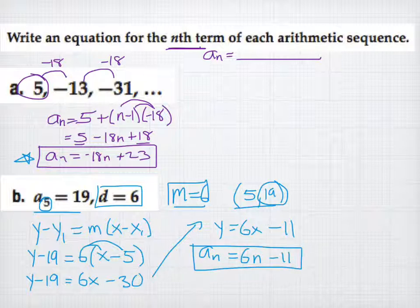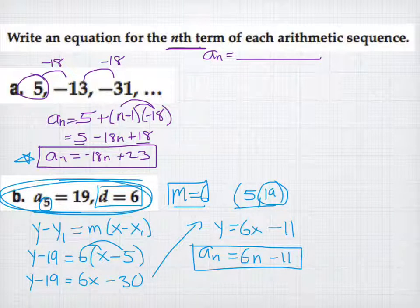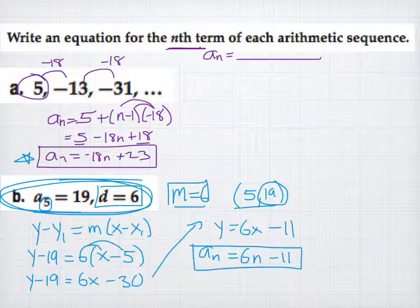Whenever you're given a term number and its value along with the common difference — for example, the fifth term is 19 and D equals 6 — treat it like a linear equation where you're given the slope and a point, then use point-slope form.